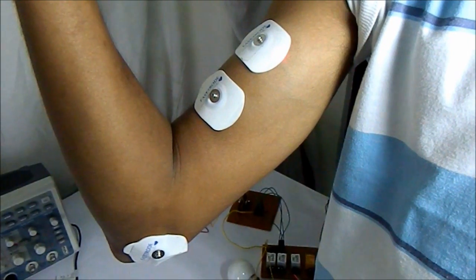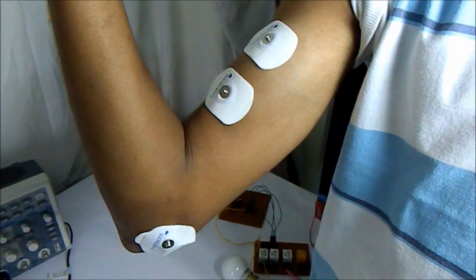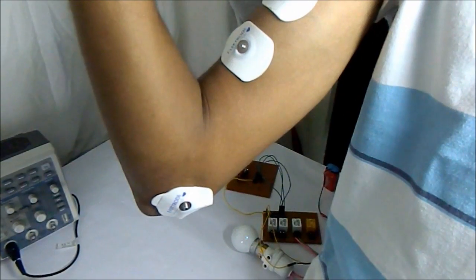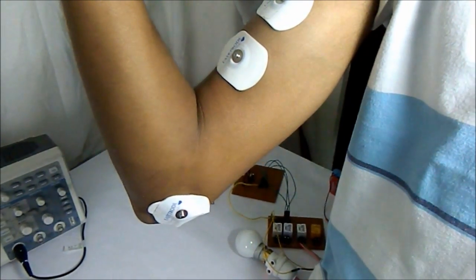One electrode is placed on the mid-muscle and the other electrode is placed at the end-muscle. The third electrode, that is the reference electrode, is placed on the elbow where the muscle content is less.